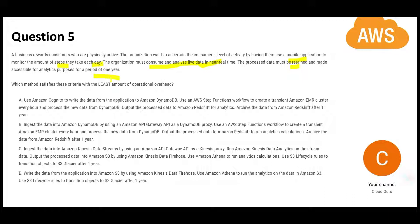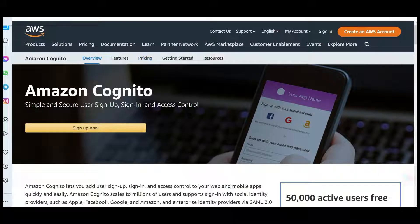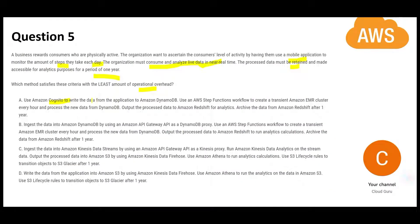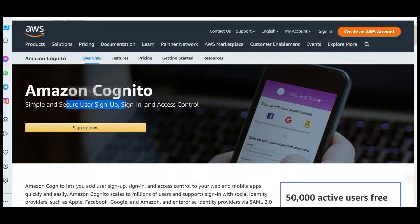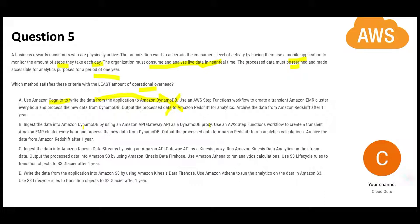Option A mentions Amazon Cognito — but Cognito is for sign-in, sign-up, and access control, not for writing application data to DynamoDB. So A is wrong. Option B says ingest data into DynamoDB first using API Gateway, then use Step Functions to create a transient EMR cluster, process data from DynamoDB, and output results into Redshift. This piles on DynamoDB, Step Functions, EMR, and Redshift — all complex, expensive services.